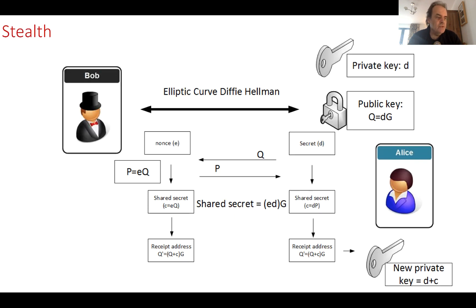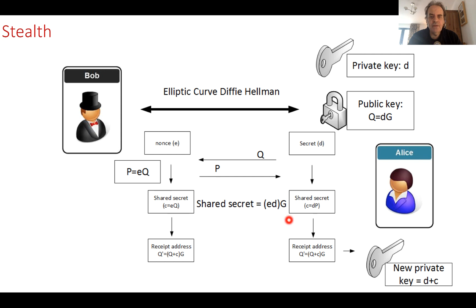One way to overcome this is to use stealth addresses. With stealth addresses, we use a key exchange method to negotiate a new public key and secret key. Alice has a private key and calculates her public key as G times D, then passes that value to Bob. Bob creates a random value E and calculates P equal to E times Q. They then have a shared secret — for Bob it's EQ, for Alice it's DP — and P is sent back so they share the same value E times D times G.